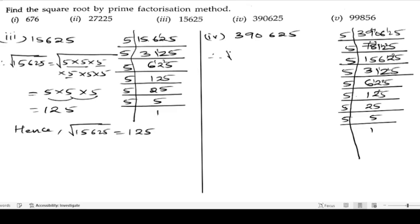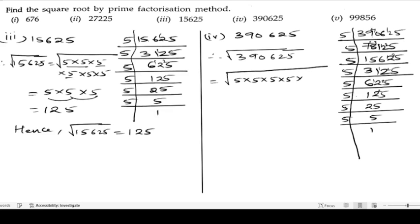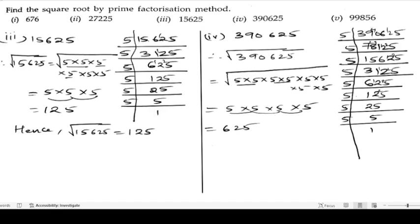We can write: the square root of 390625 equals 5 into 5 into 5 into 5 into 5 into 5 into 5 into 5. For each pair of 5s we get one single 5, so we get four 5s: 5 fives are 25, 25 fives are 125, 125 fives are 625. Hence, the square root of 390625 is 625.